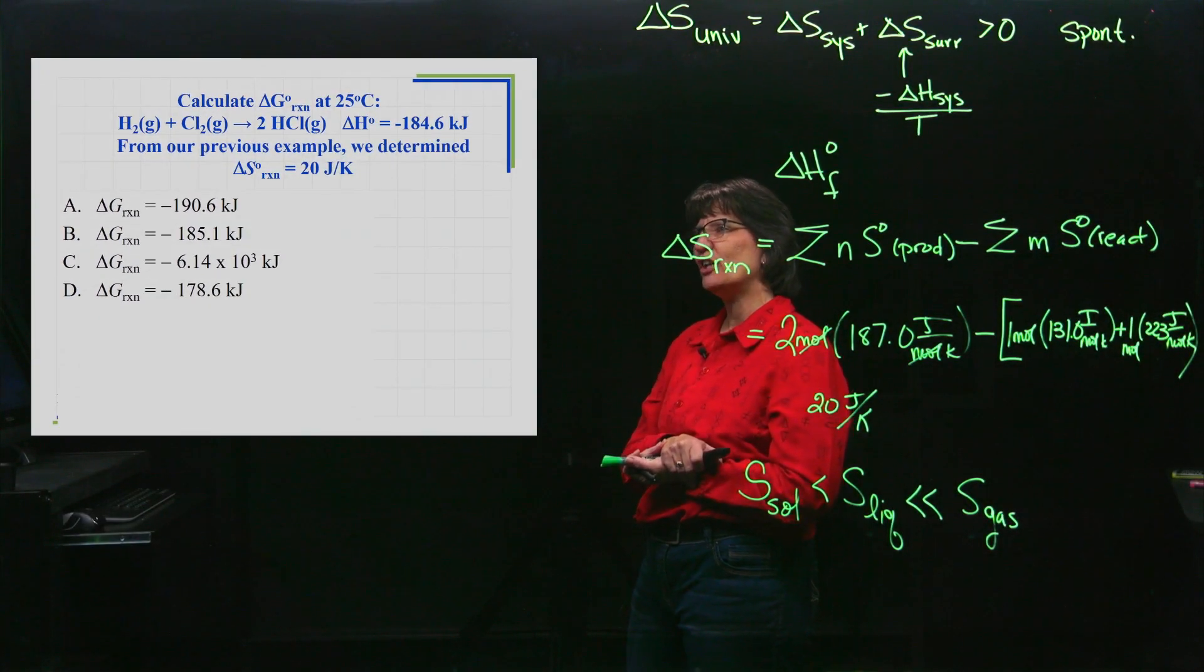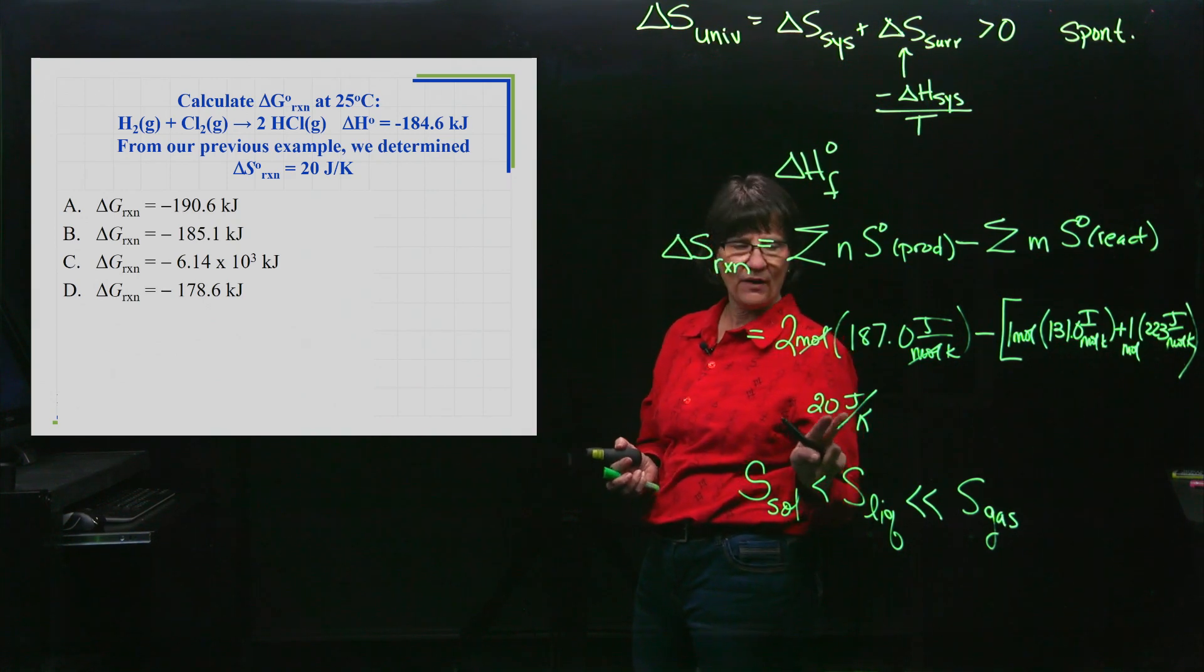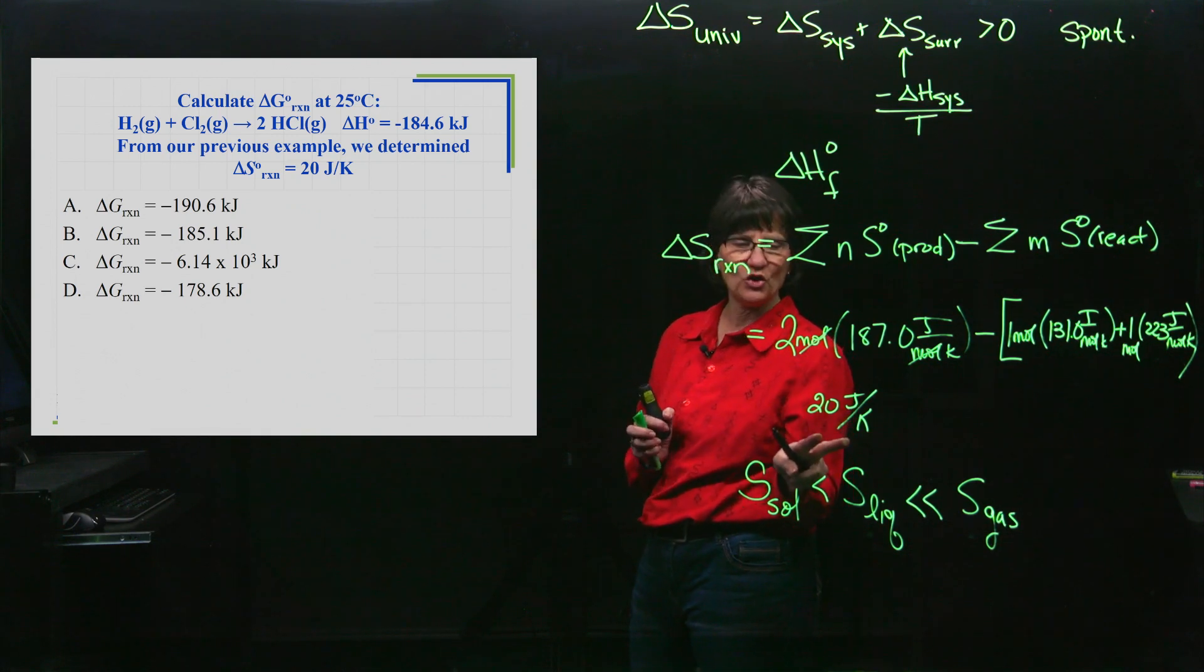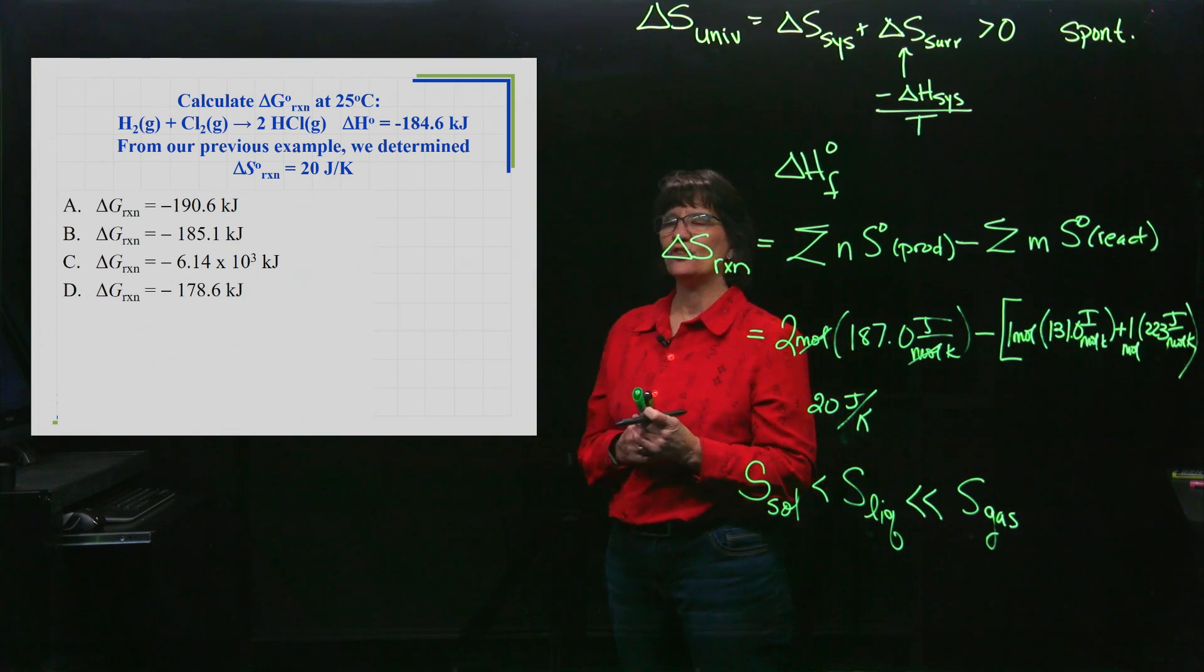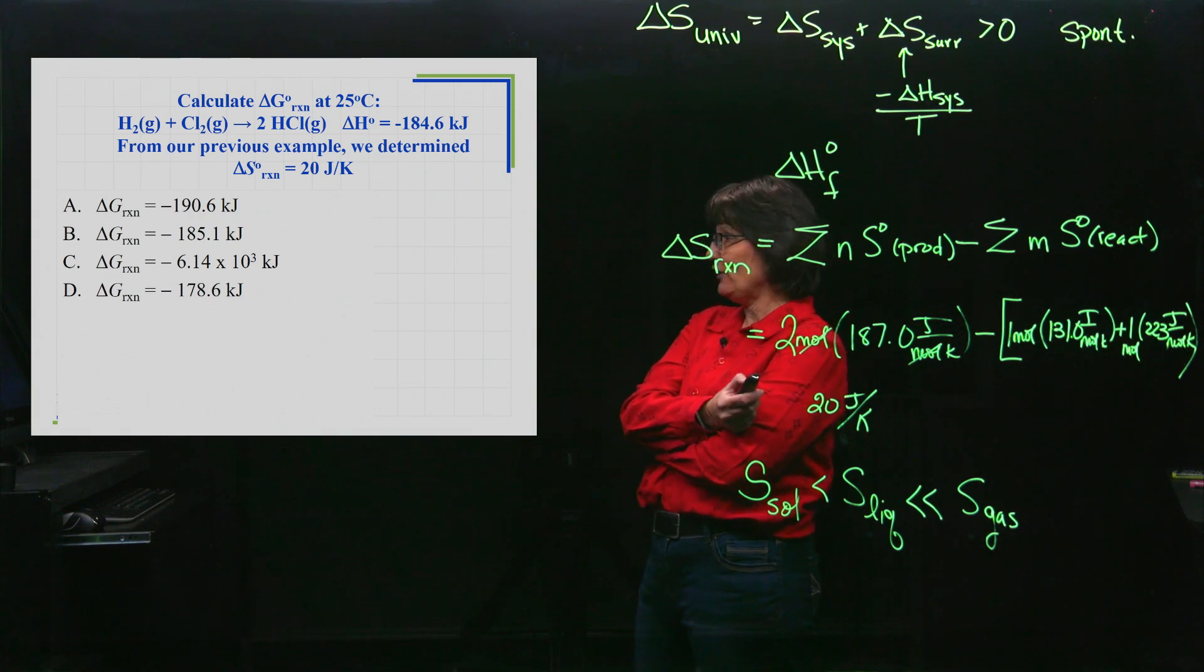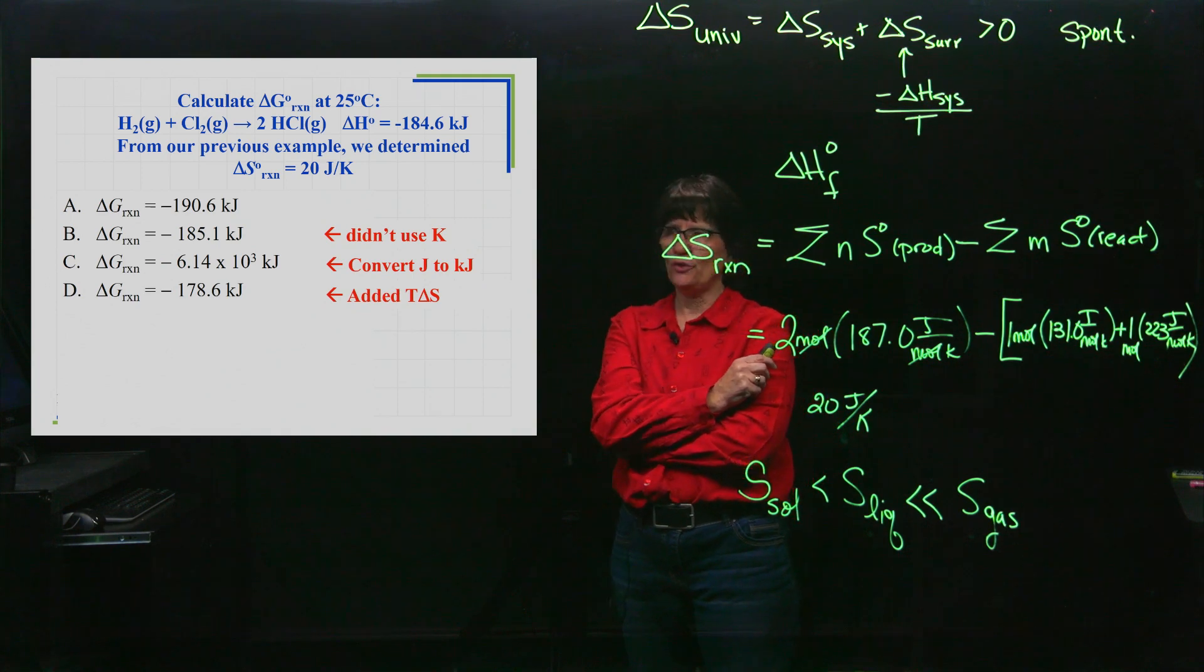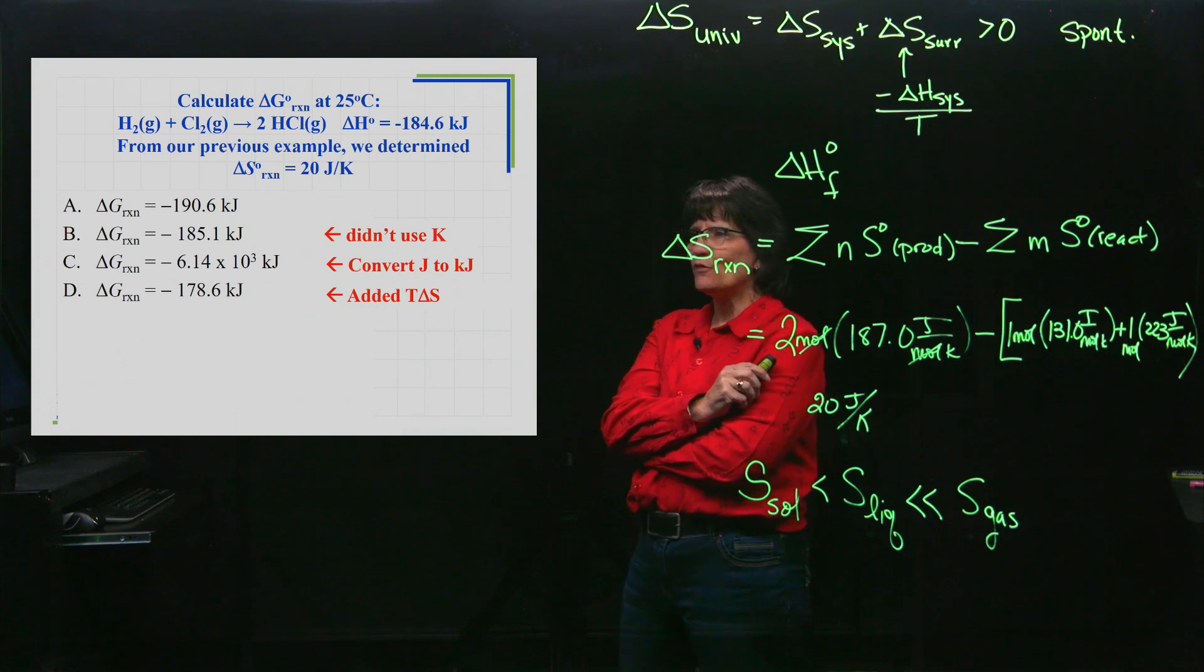Now let's take the same reaction. Look through your notes, and I want you to calculate the ΔG of this reaction. We're utilizing and bringing forward the fact that we already calculated the ΔS to be 20 joules per Kelvin. Now I'm giving you the ΔH. Stop and find the ΔG of this reaction.